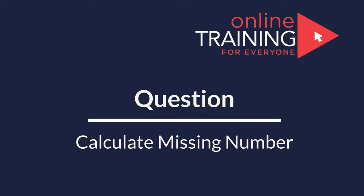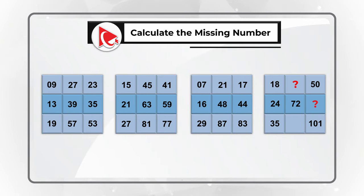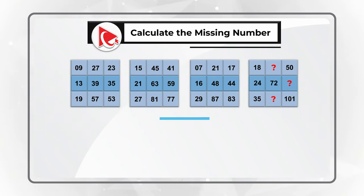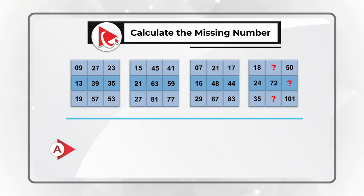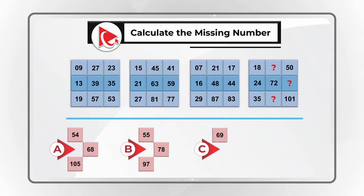Here is an amazing question which truly tests your analytical skills. You're presented with four sets of 3x3 matrices, each with nine numbers. In matrix four, there are three missing numbers that you need to calculate. The four choices are: Choice A: 54, 68, and 105; Choice B: 55, 78, and 97; Choice C: 69, 80, and 115; and Choice D: 74, 88, and 125.